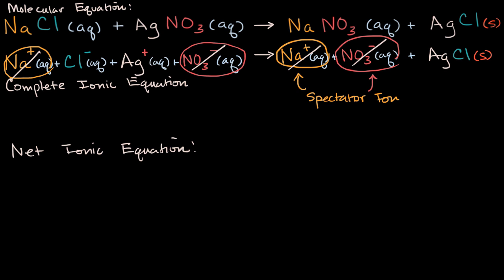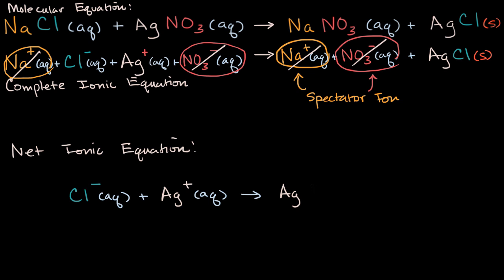What we have left over is some dissolved chloride (aqueous) plus some dissolved silver (aqueous), and if you put those two together you get solid silver chloride. What's useful about this net ionic equation is that it's more compact and very clear about what is actually reacting. However you get your chloride into the solution, however you get your silver into the solution, these are the things that are going to react to form this solid. For instance, instead of sodium chloride you could use potassium chloride — the potassium would be the spectator ion — but either way, your net ionic equation would be the same.